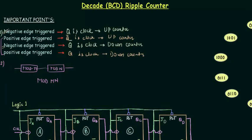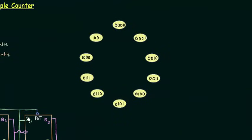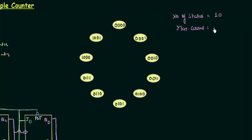Now we move to the Decade or BCD Ripple Counter. As it is a ripple counter, the clock is not simultaneous to all flip flops. The number of states is 10, because BCD (Binary Coded Decimal) goes from 0 to 9. Four bits are used, starting from 0000 and ending at 1001, which is 9. The maximum count equals states minus 1, so 10 minus 1 gives 9.